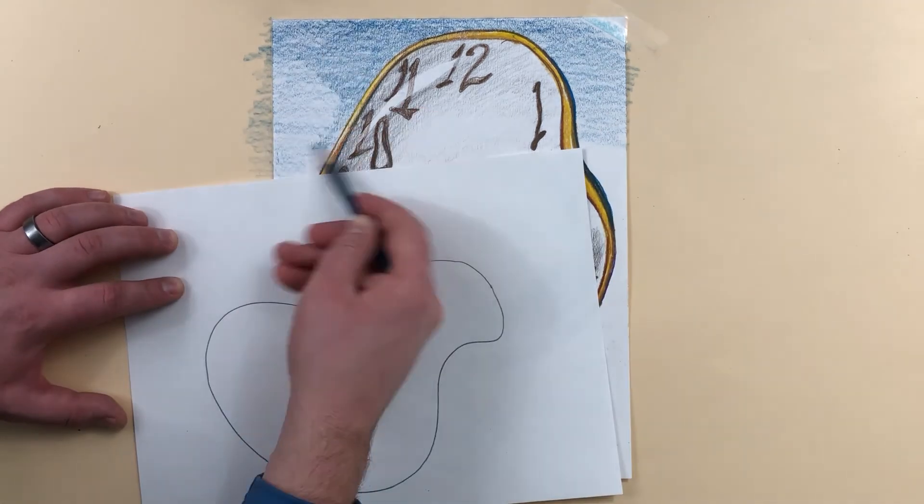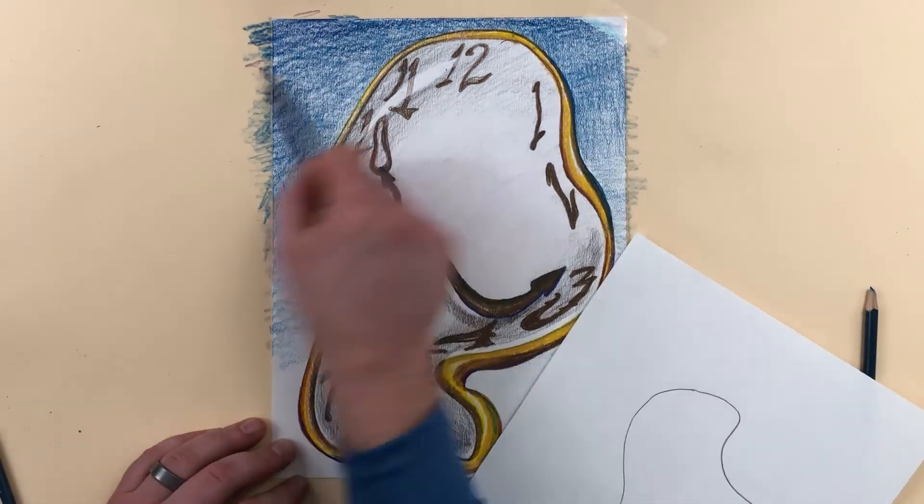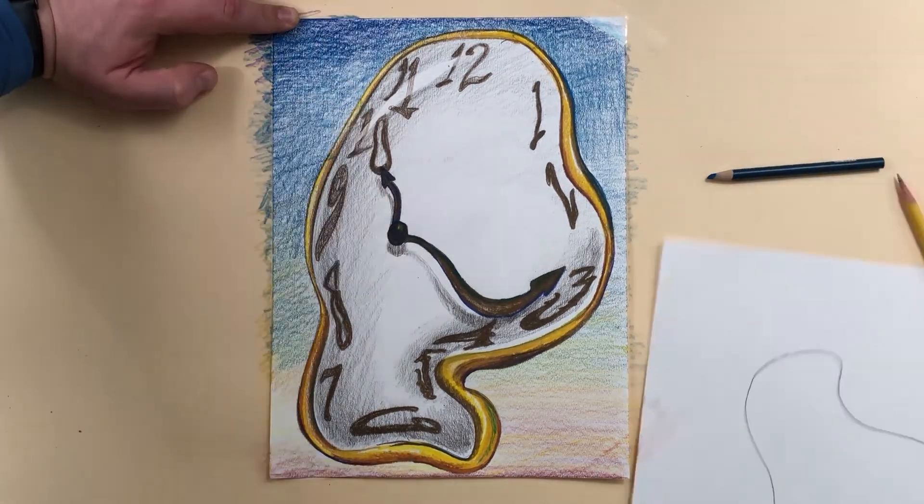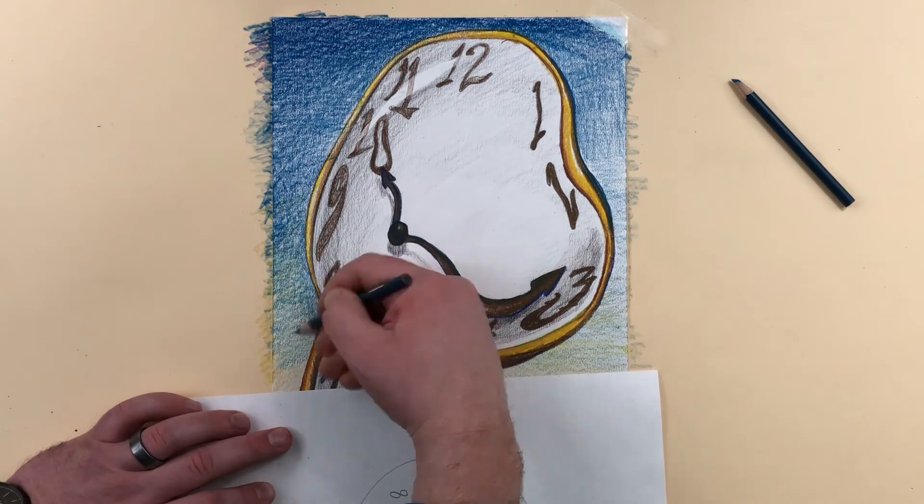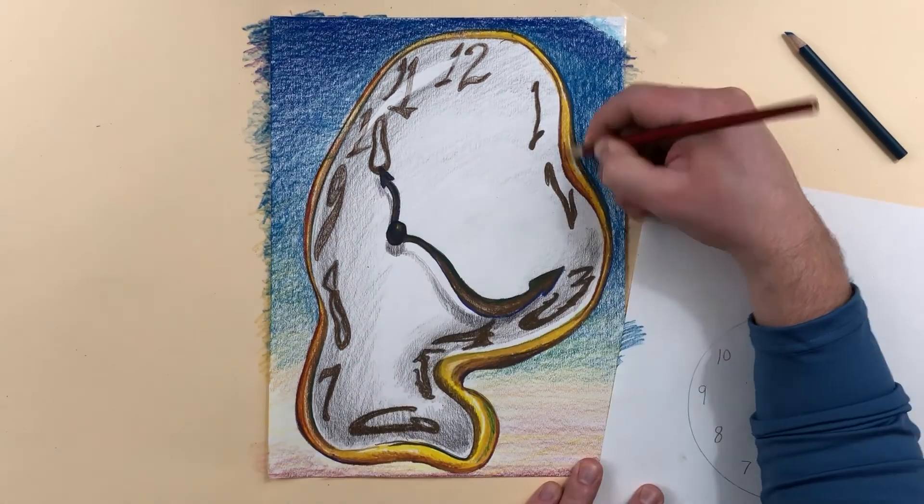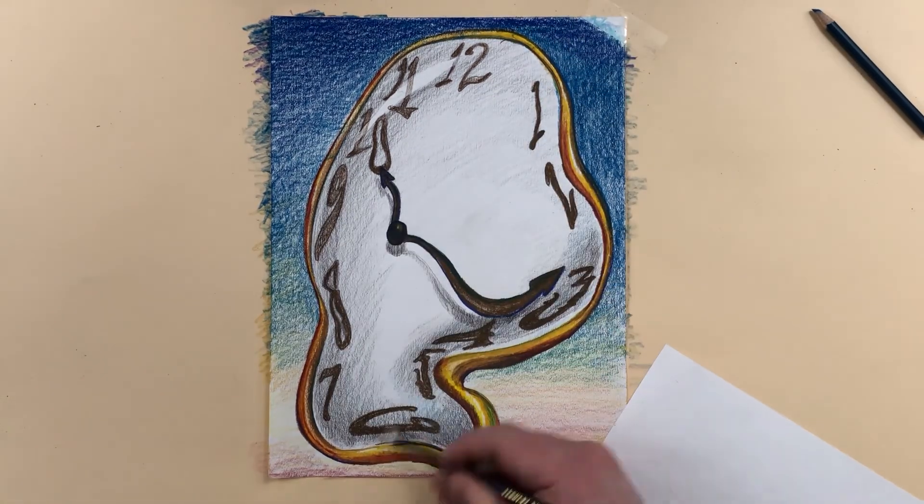For the background I'm doing like a blue that fades into a lighter blue and then fades into yellow and then fades into like a brown. That's just a generic like desert sky looking type scene like you would see in a Dali painting. When coloring the background, always go side to side with your pencil, not up and down. That will look a lot better.